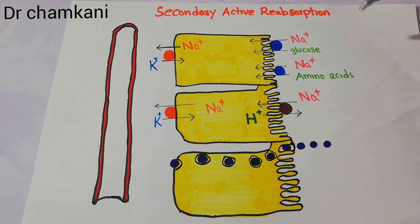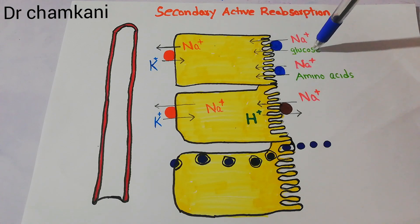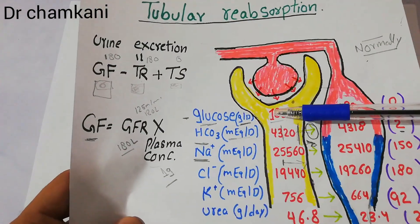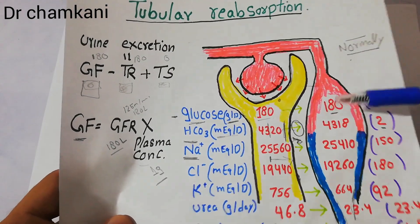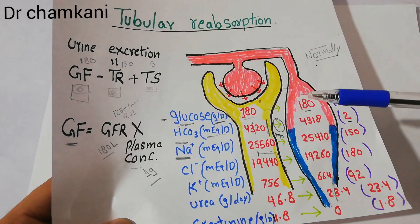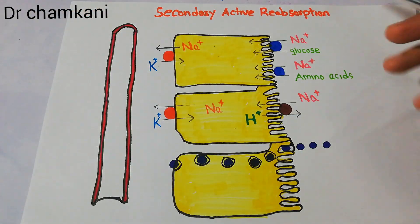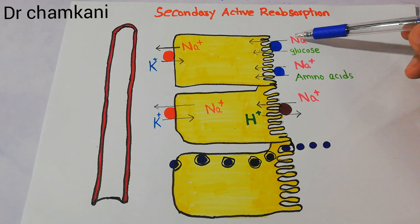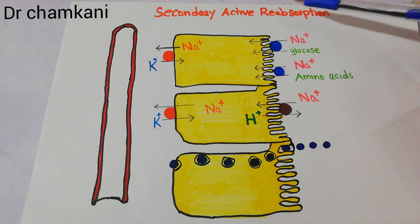Now we take into account the love story of sodium and glucose. Glucose is present in the proximal tubule and is absorbed actively from the proximal tubule into the blood. It needs some energy to be reabsorbed into the blood, but it does not have its own energy or power. So it will utilize the energy of sodium — and that's why it is called secondary active reabsorption.